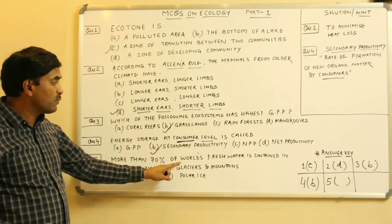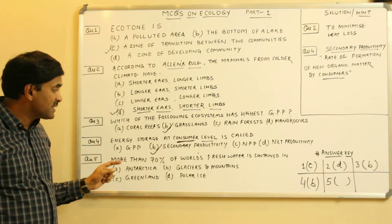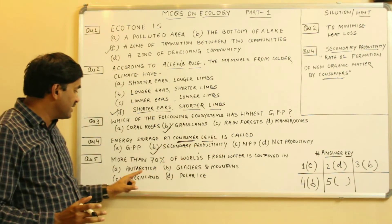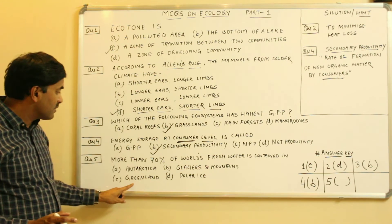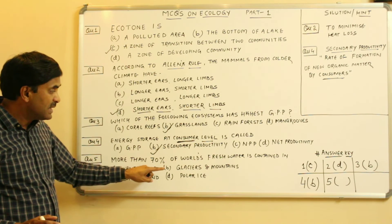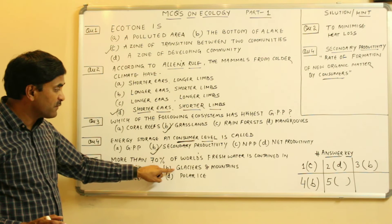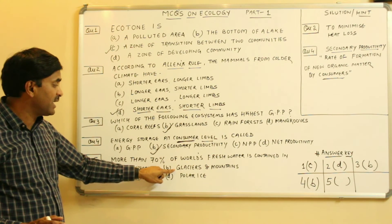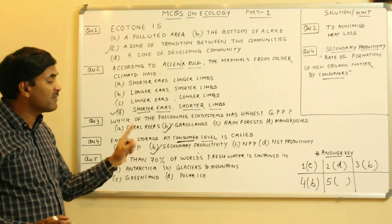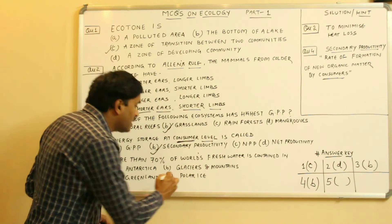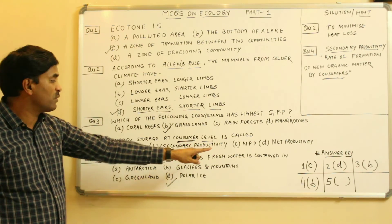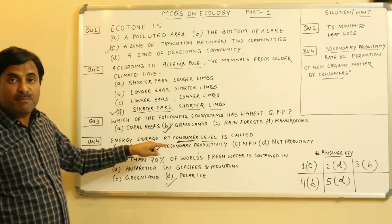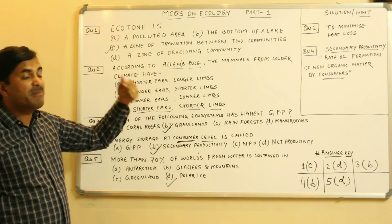The last question asks: more than 70% of the world's freshwater is contained in what? The options include Antarctica, glaciers and mountains, Greenland, and polar ice. Some people incorrectly answer glaciers and mountains, but you must know that more than 70% of the world's freshwater is contained in the polar ice. Question number five has the answer D.